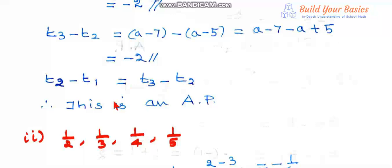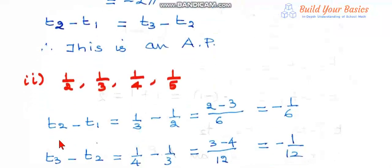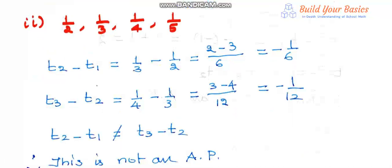Second substitution: we are given four terms 1/2, 1/3, 1/4, 1/5. Let us find t2 minus t1: that is 1/3 minus 1/2, which equals minus 1/6. Then t3 minus t2: 1/4 minus 1/3, that is minus 1/12. We find t2 minus t1 is not equal to t3 minus t2, so this is not an AP.